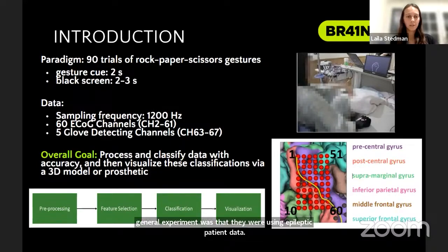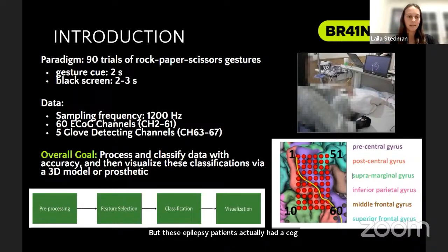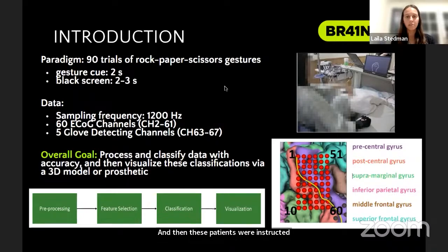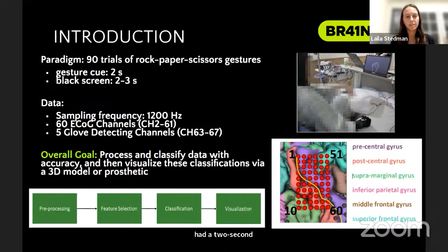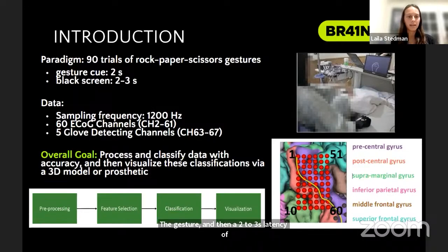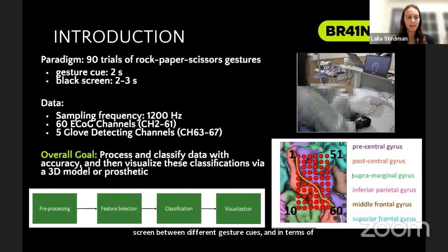These epilepsy patients had ECOG intracranial grids right on their cortex, and these were implanted. These patients were then instructed to do 90 trials of rock, paper, scissor gestures. These gestures had a two-second cue to do the gesture and then a two-to-three second latency of a black screen between different gesture cues. We received 60 ECOG channels in our dataset, as well as five glove detecting channels.